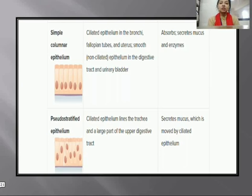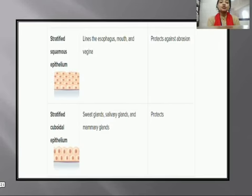Pseudo-stratified epithelium is mainly present in the trachea, and a large portion is found in the upper respiratory tract. Its main function is the secretion of mucus.